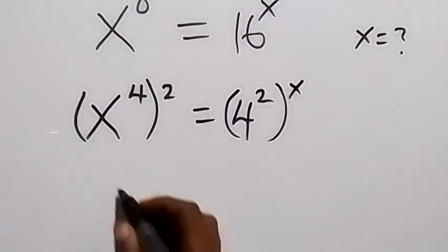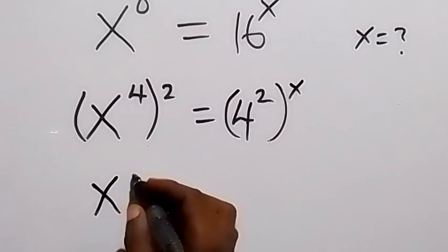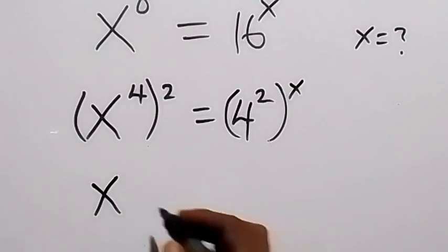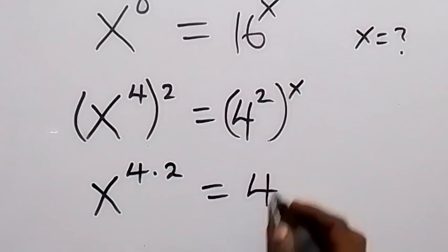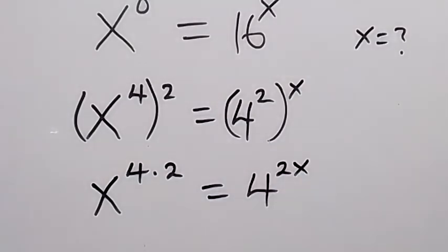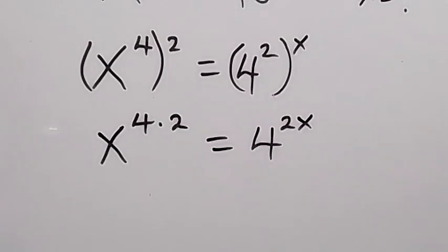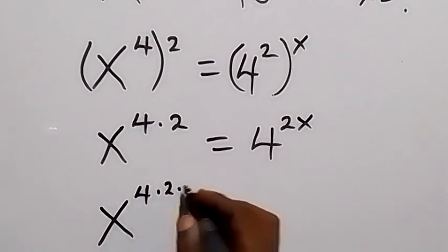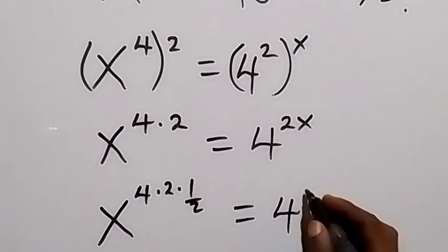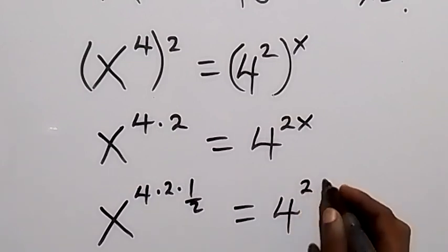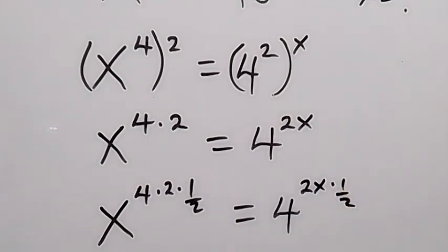When we multiply the powers, we have x raised to power 4 times 2. Let's leave this one as 4 times 2, then equals 4 raised to power 2x. Now let's remove the 2 on this side and multiply both powers by 1 over 2. So multiply this power x raised to power 4 times 2 by 1 over 2, and also on this side we multiply 4 raised to power 2x by 1 over 2.